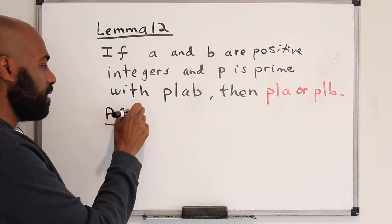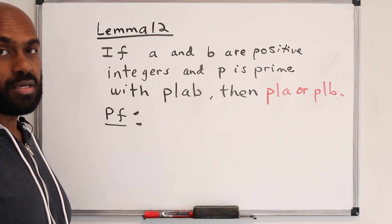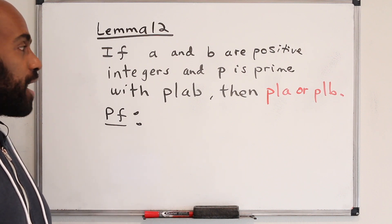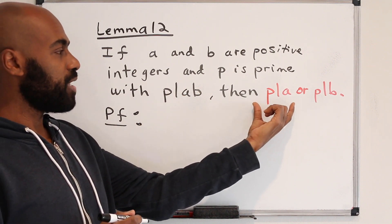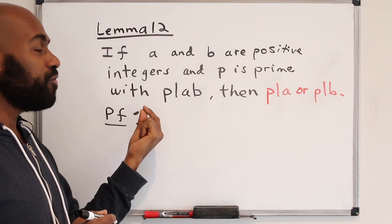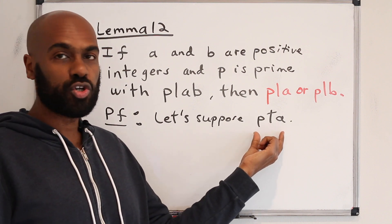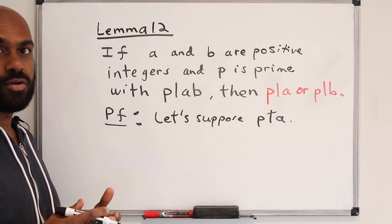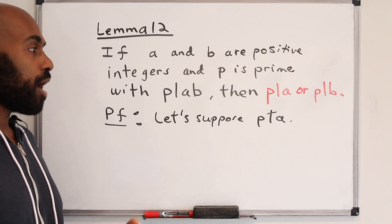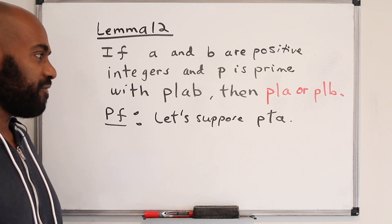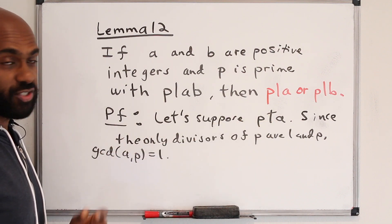To prove this, suppose p doesn't divide a. Since the only factors of p are p and 1, and p is not a divisor of a, the greatest common divisor of a and p is 1. By Bezout's Lemma, there exist integers x and y so that ax + py = 1.